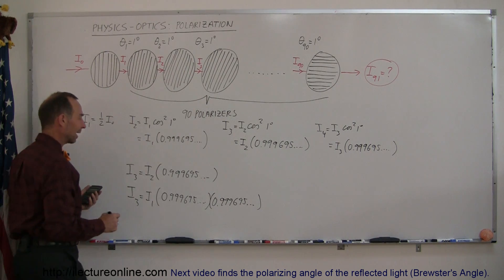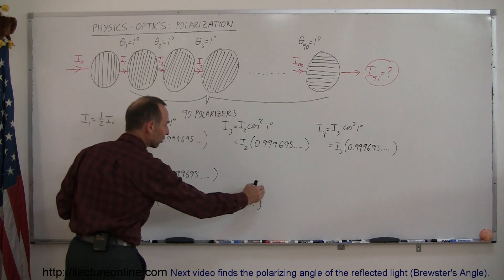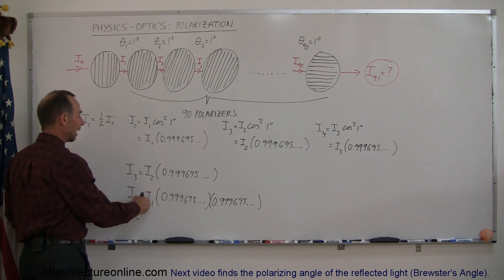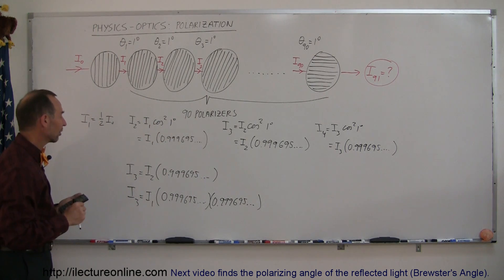And then if you find i sub 4, you can then say that's equal to i sub 1 times this thing 3 times multiplied together, and i sub 5 will be i sub 1 times this number multiplied together 4 times with each other and so forth.